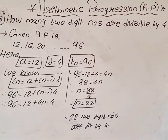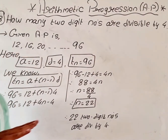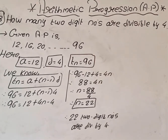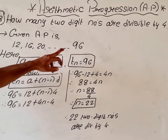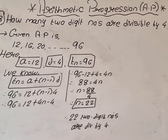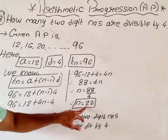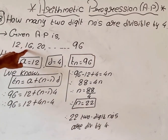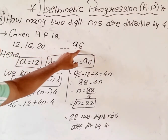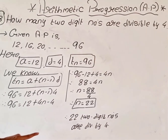Let's review the question: how many two-digit numbers are divisible by 4? The first two-digit number divisible by 4 is 12 — we are not considering 8 because 8 is a one-digit number. Next come 16, 20, and so on. The last two-digit number divisible by 4 is 96. I took A = 12, D = 4, and considered 96 as T(N). Solving for N gave N = 22, meaning 96 is the 22nd term. So 22 two-digit numbers are divisible by 4.